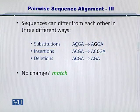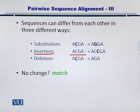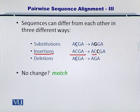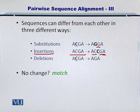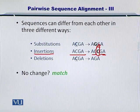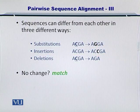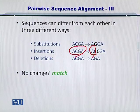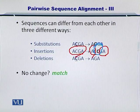Next, let's take a look at insertions. If you have a sequence ACGA and you're comparing it with another sequence ACCGA, you can guess that there is an extra C here, and this is an insertion. So the two sequences will match very nicely except for this extra C in the middle. This is an insertion.